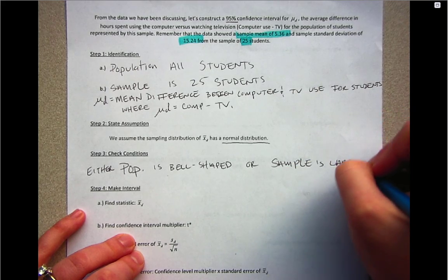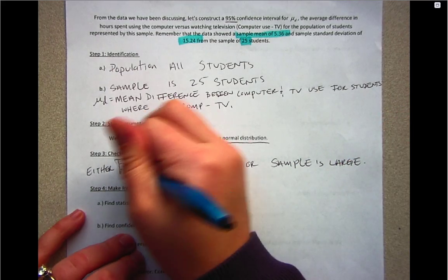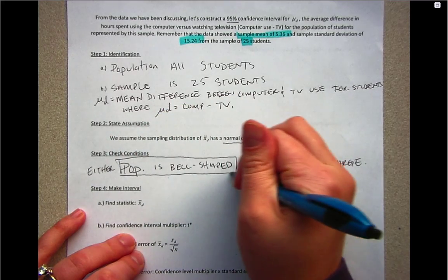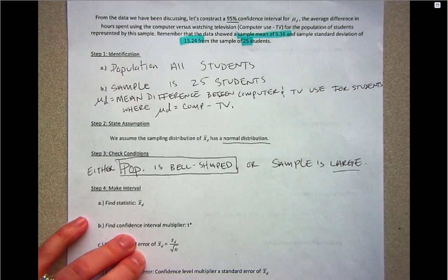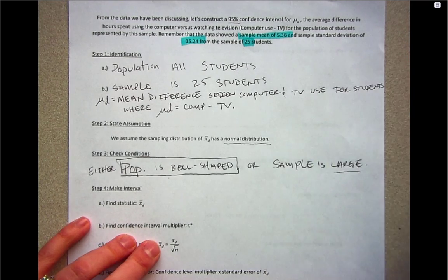Here, because of what we saw from the sample, we can assume that the population is bell-shaped. For a large sample, we'd need n ≥ 30, and we only have 25.